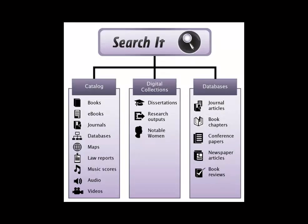We'd like to give you a very brief introduction to SearchIt, the newest way to search materials available through K-State libraries. SearchIt is a new type of tool that provides an incredibly quick way to search across library resources, including journal articles, books from our physical collection, and materials from our unique digital collections.